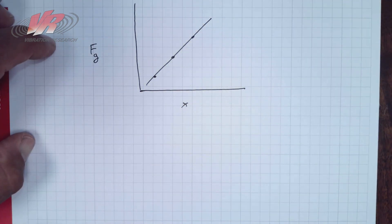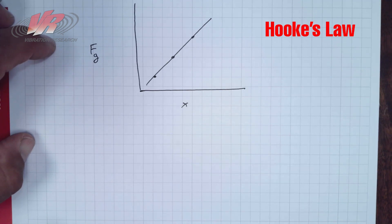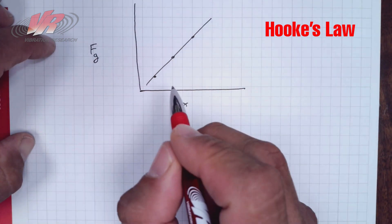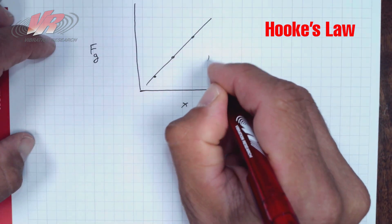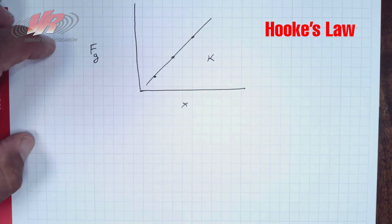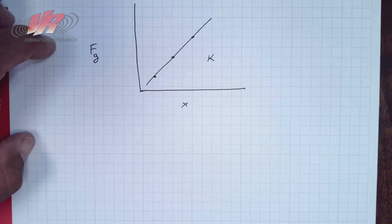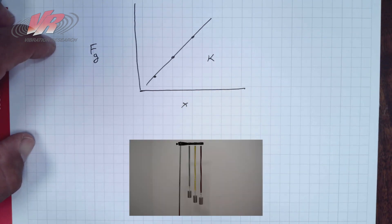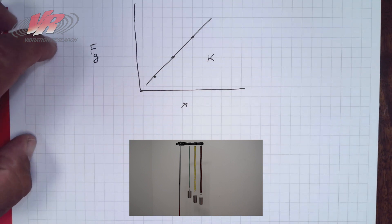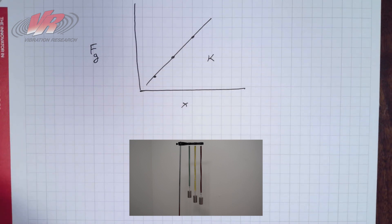That linear relationship we describe as Hooke's law. The slope of that line is what we call the K value — the K value for that particular spring. The green spring has its own unique K value, the yellow spring has its own unique K value, as does the red. Any kind of spring would have its own unique K value. That's called Hooke's law.